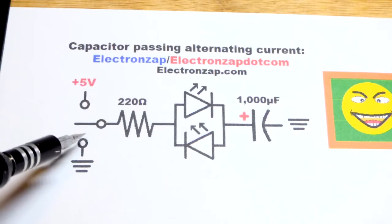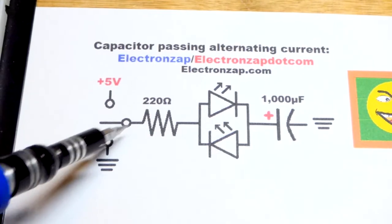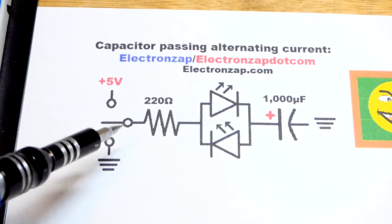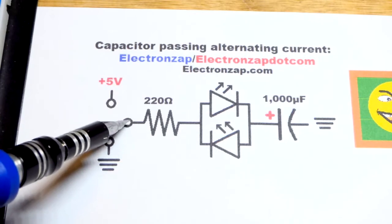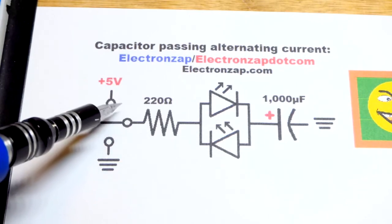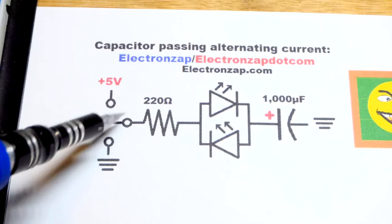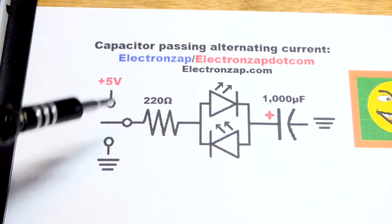We have a current limiting resistor right there, and I don't have an actual single pole double throw switch, but I'm going to just use a jumper and manually move it from the positive supply to the negative supply.